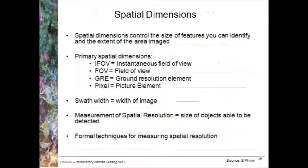The spatial dimension controls the size of features you can identify and the extent of the area that's been imaged. Key terms include the instantaneous field of view, the field of view, the ground resolution element, and the pixel or picture element. The pixel size relates to the ground resolution element — that area on the ground which the pixel represents. The swath width is the width of the image, giving us an idea of the extent it covers. Usually people refer to the pixel size as being the spatial resolution.